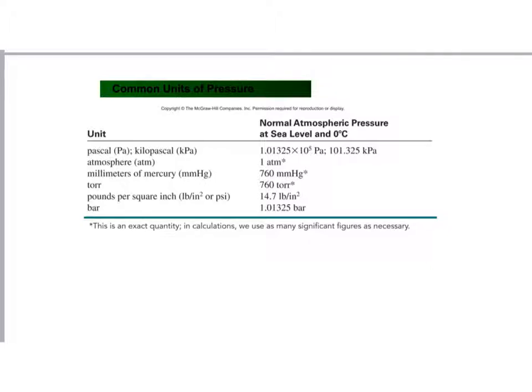Just because we like to drive students crazy, we use different units. Chemists use atmospheres a lot. They use millimeters of mercury a lot. Sometimes engineers use pounds per square inch or bar or pascals. But for the most part, chemistry classes use these.